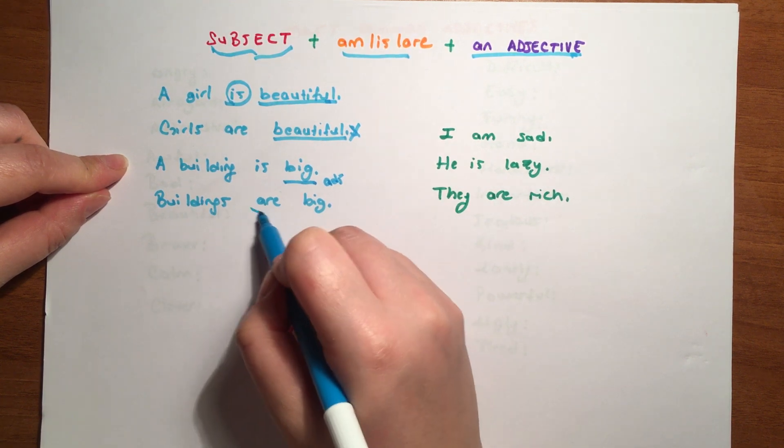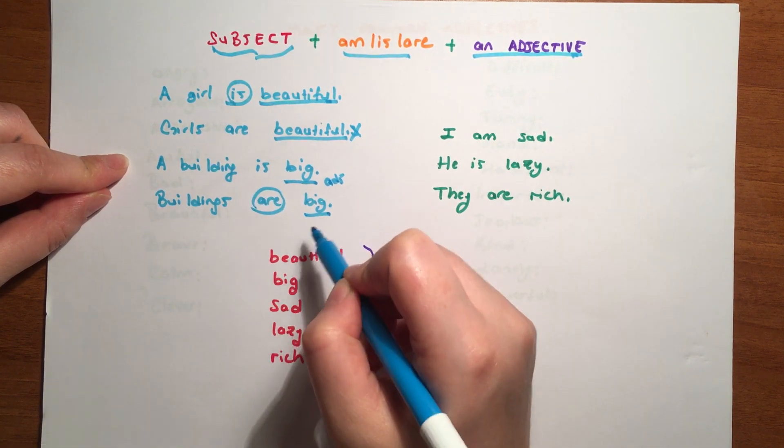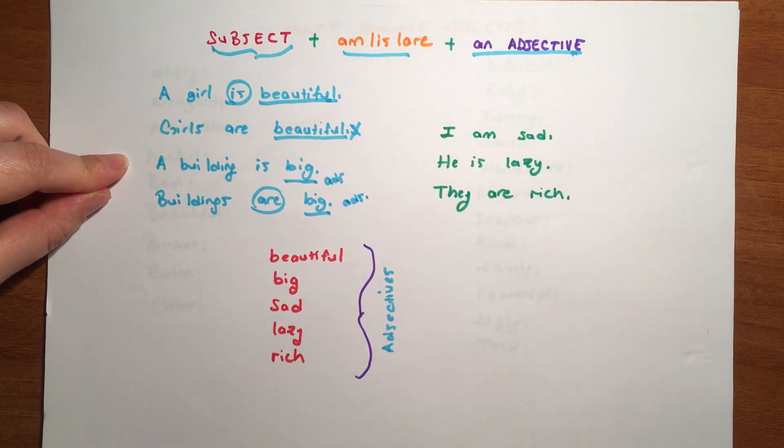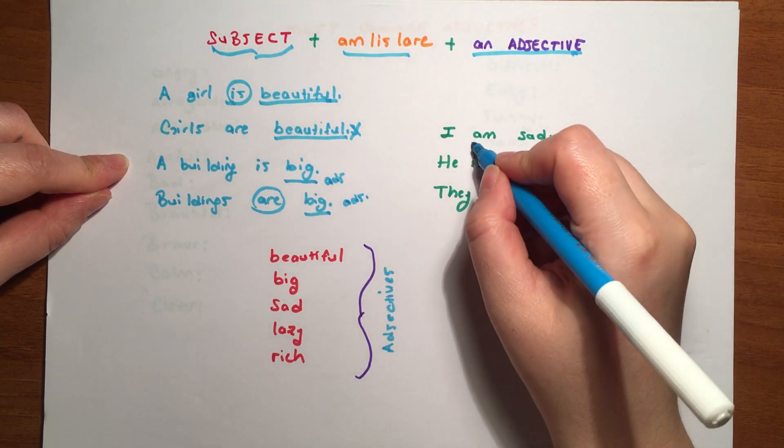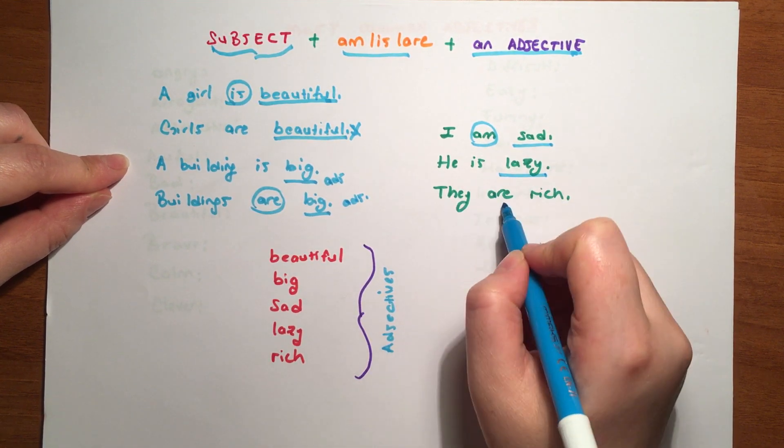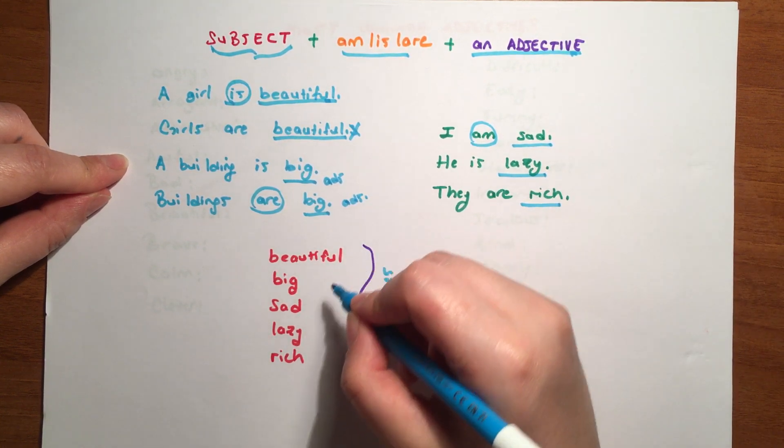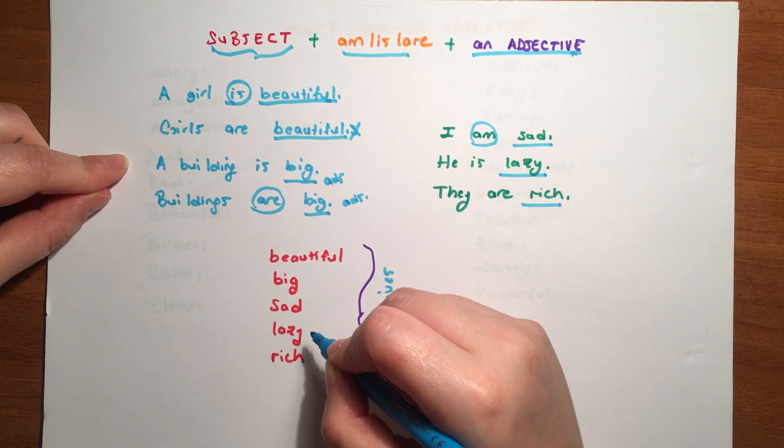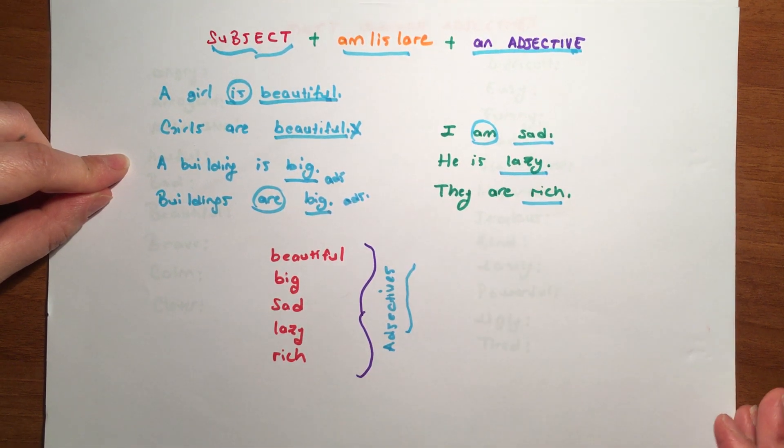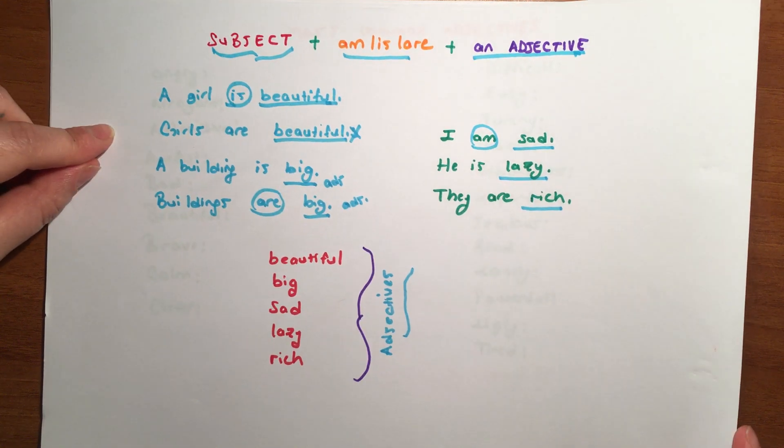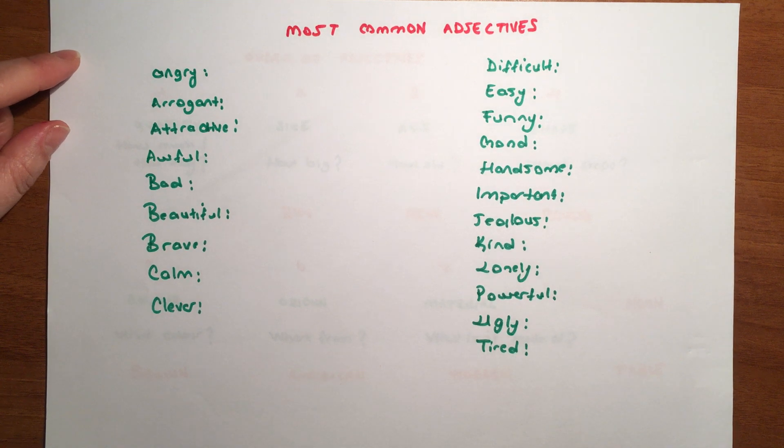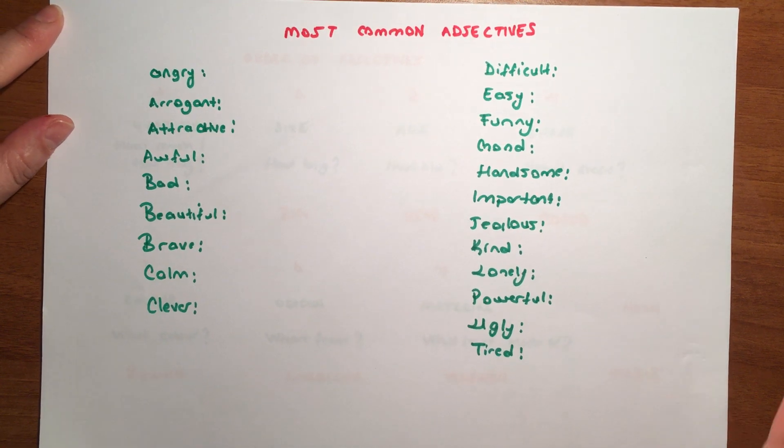A building is big - big is the adjective in this sentence. And buildings are big, again not bigs. You can't use bigs. It's an adjective. Or I am sad, he is lazy, they are rich. Beautiful, big, sad, lazy, rich - all of them are adjectives. Please don't forget, you can't add s to your adjectives. We can't make adjectives plural.